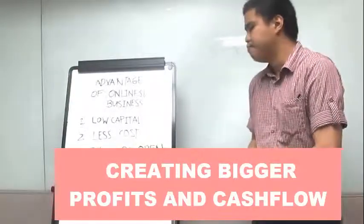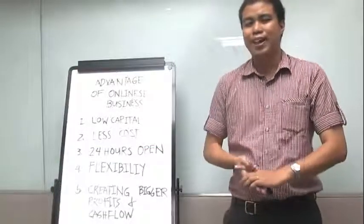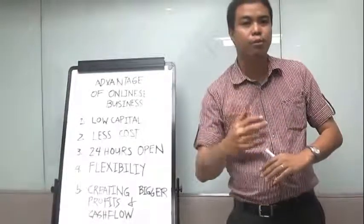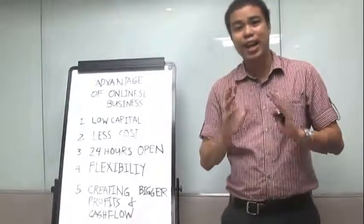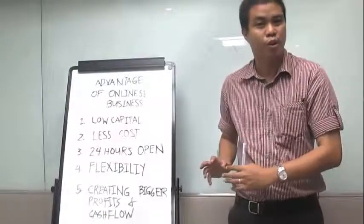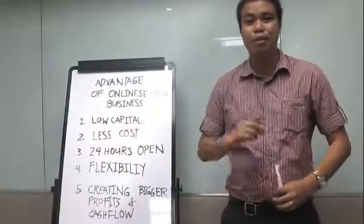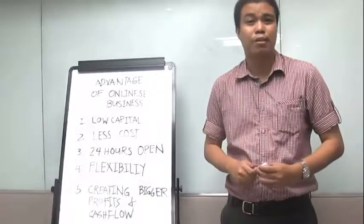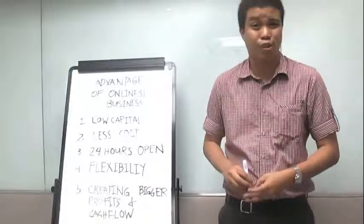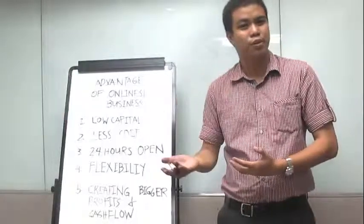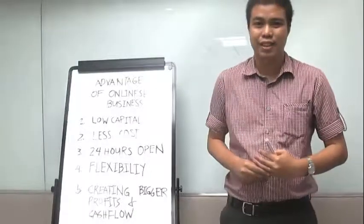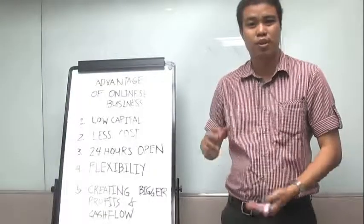And number 5 is creating bigger profits and cash flow. Why? In business, you're aiming for profit. So you have to measure it. What's good here, you can measure it. What you're earning. The so-called cash flow, that's important. The cash flow, what's coming in? The money in your business. So you can recover your capital. In business there's what we call everyday cost. Of course what you spend, your cost in representation, your cost, in all of these. So you can recover it quickly. And you can get your target profit.